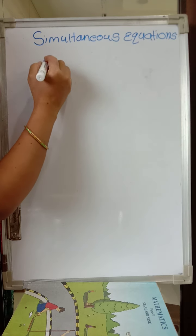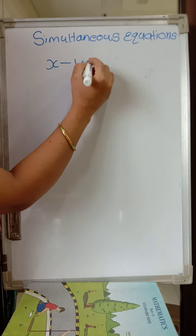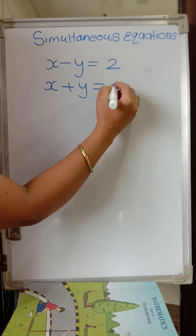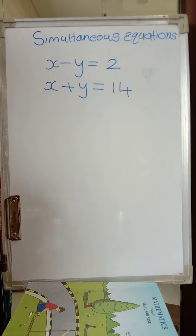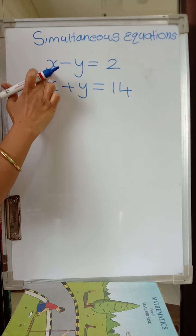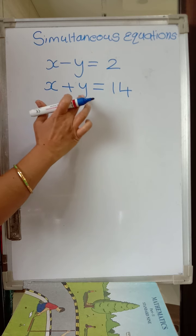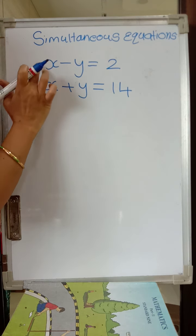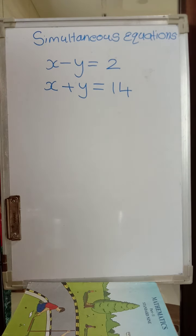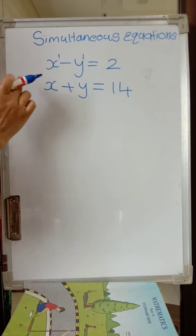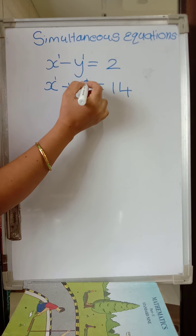I am writing one equation: x minus y is equal to 2, and x plus y is equal to 14. Now carefully observe these two equations. In the first equation, how many variables can you see? Two variables — one is x, another is y. In the second equation, again we can see two: x and y. The degree of x is 1, and y is also raised to 1.